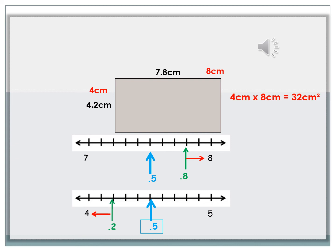To find the area of this rectangle, you now need to multiply 8 centimeters by 4 centimeters. And we know that that equals 32. So your answer would be 32 centimeters squared.